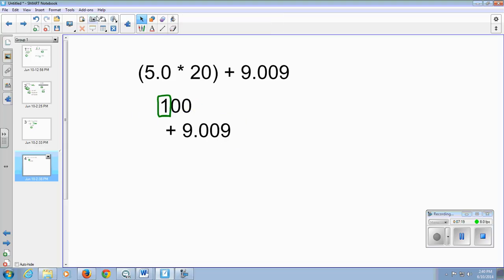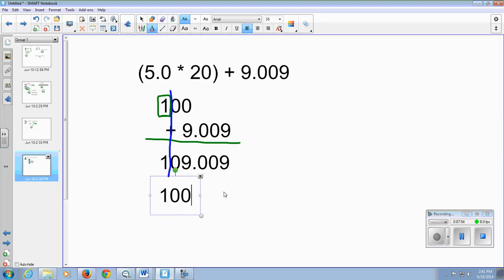We get an answer of 109.009. So 0 doesn't round one up at all, and we don't care about everything behind it. This ends up rounding, according to your significant digit rules, to 100.